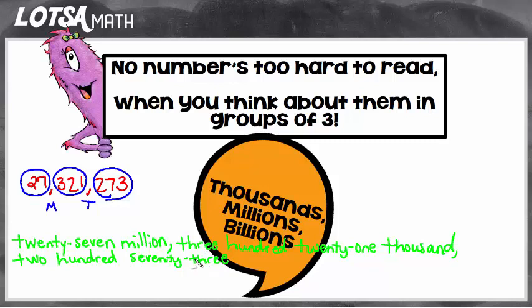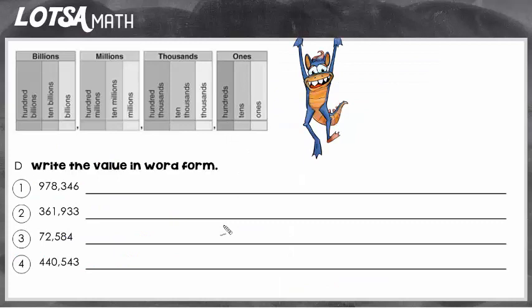So when you write word form, you first have to be able to say it correctly, and then what you say is what you write. Remember, no number is too hard to read when you think about them in groups of three — thousands, millions, billions. So let's look at some examples now.